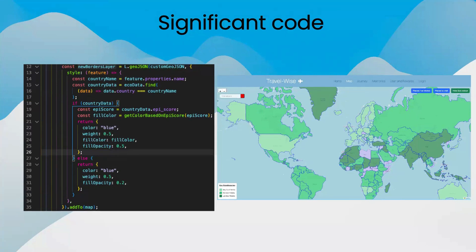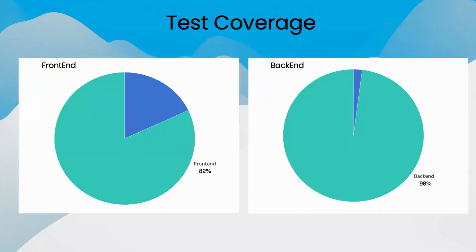Thank you very much, Abdul. As was mentioned a couple of slides ago, we used Jest to test the back end and Vitest to test the front end. Using this, we managed to get 98% test coverage on the back end and 82% test coverage on the front end. We had some problems testing the front end, in particular with testing the map components. We didn't really have any experience with this, but using the Vitest documentation — in particular the sections on mocking imports and mocking functions — we were able to eventually overcome this challenge.